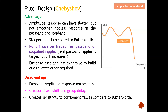Disadvantages: the pass band amplitude response is not smooth. Chebyshev has greater phase shift and group delay compared to Butterworth and also Bessel. It also has greater sensitivity to component values used compared to Butterworth.